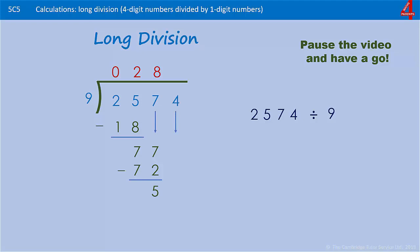Eight times nine is 72. We take that away from the 77 and that leaves us with five. Now we bring down our last digit. How many times does nine go into 54? It goes in exactly six times, and six times nine is 54. Take that away and we're left with zero. 2574 divided by nine is 286.